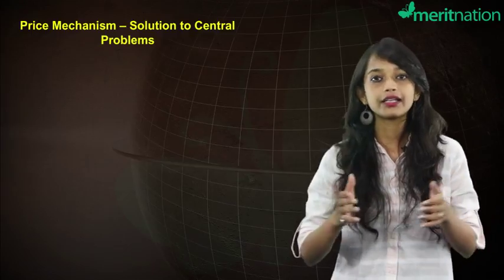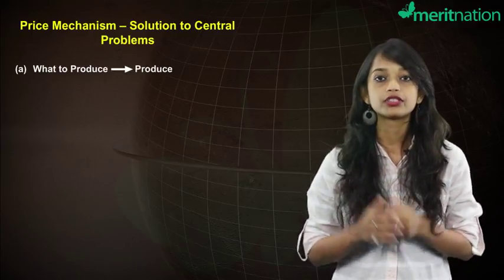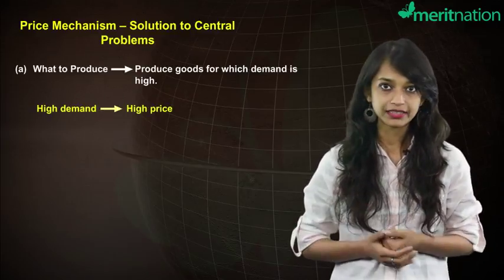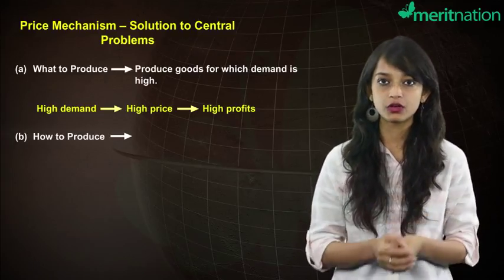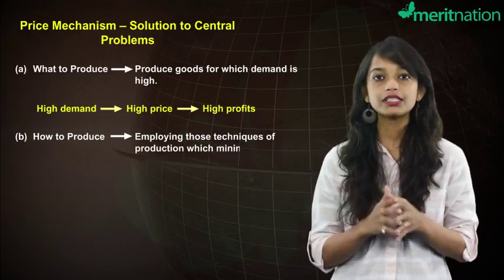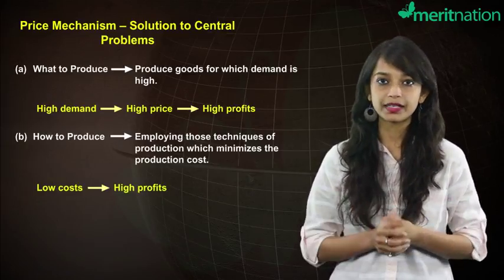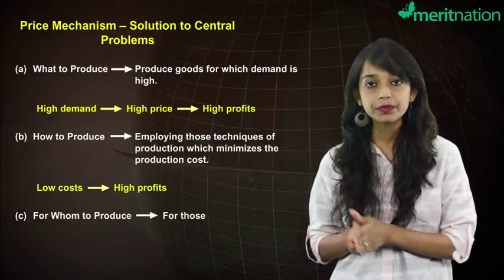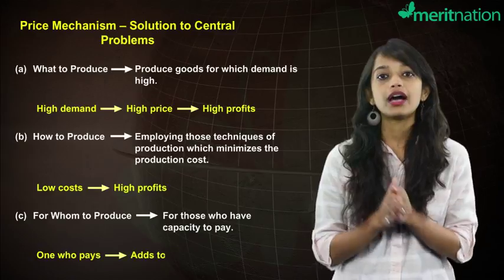Let us discuss how these three central problems are solved in a market economy system. Starting with the first problem of what to produce: this problem is solved by producing those goods for which the demand is high, because high demand means high prices and high prices means higher profits for the capitalists. The second problem of how to produce is solved by employing those techniques of production which minimize the production cost, because lower cost implies higher profits. And finally, the problem of for whom to produce is solved by producing for those people who have the capacity to pay, because the one who can pay the price is the one who adds to the profit.